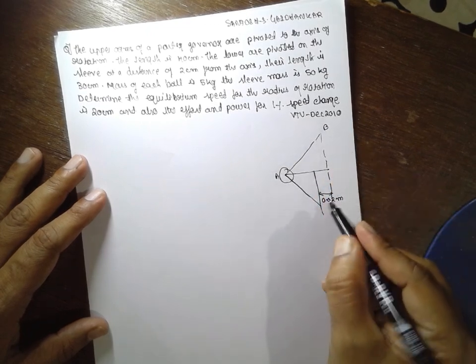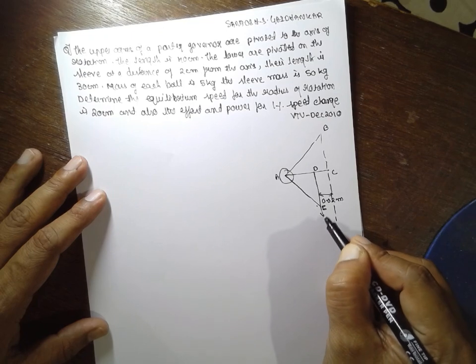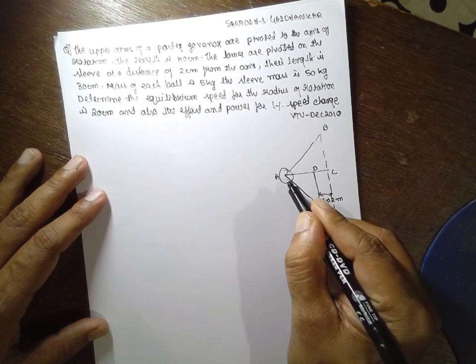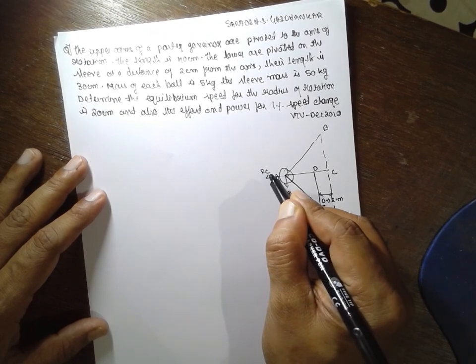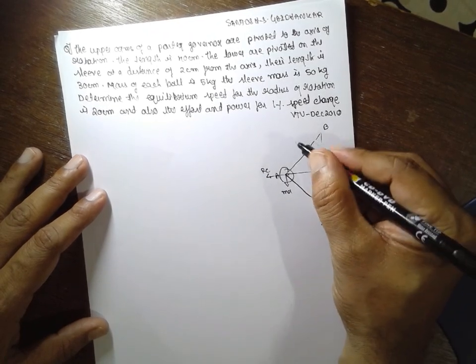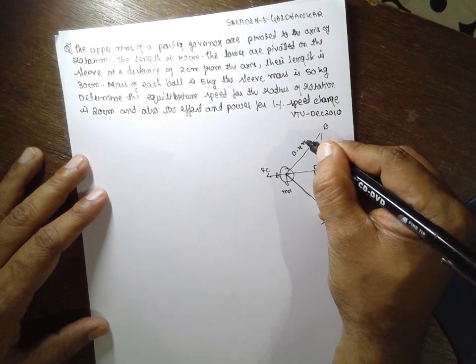A, B, C, D, E. This is W by 2. This will be Mg. This is centrifugal force FC. And 40, that means 0.4 m length.